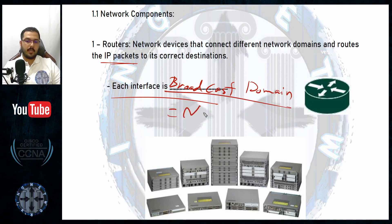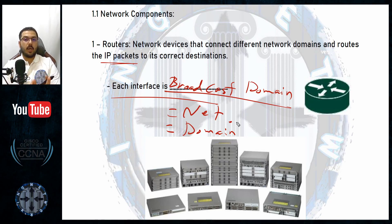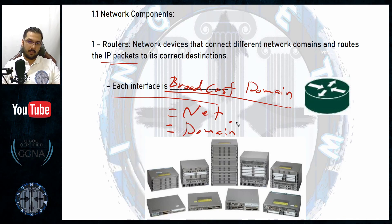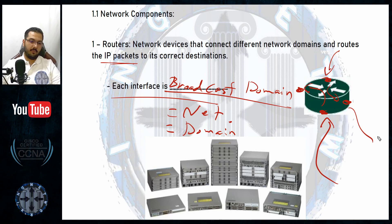Each interface on a router is a broadcast domain. A broadcast domain is one isolated, individual network that sees only its own locally connected devices. For example, a room with five users is one single broadcast domain — all devices inside can communicate together. They cannot reach outside the room without a router. So each router interface is one dedicated broadcast domain, and the router receives packets from one domain and forwards them to another.